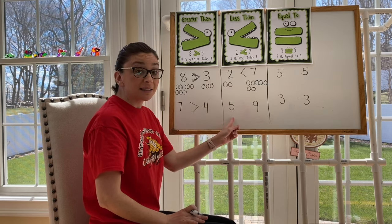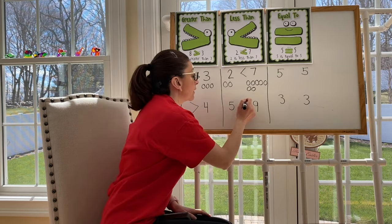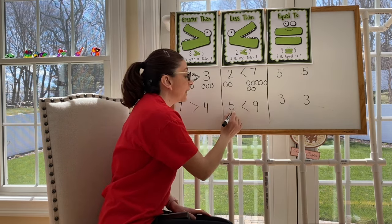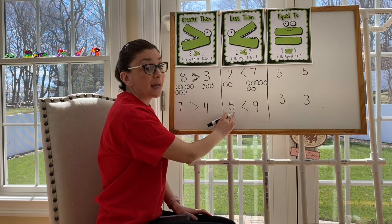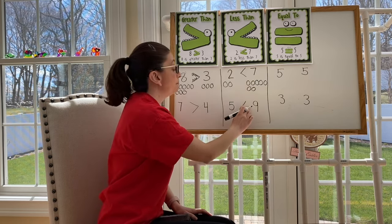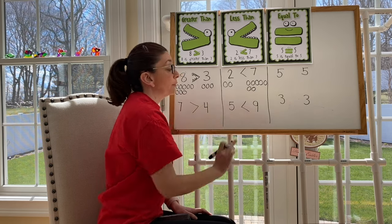Five is less. So I look at my arrow, and the small part, the point of my arrow, faces the smaller number, the number that is less. And the bigger part, the open part, faces the number that is more.